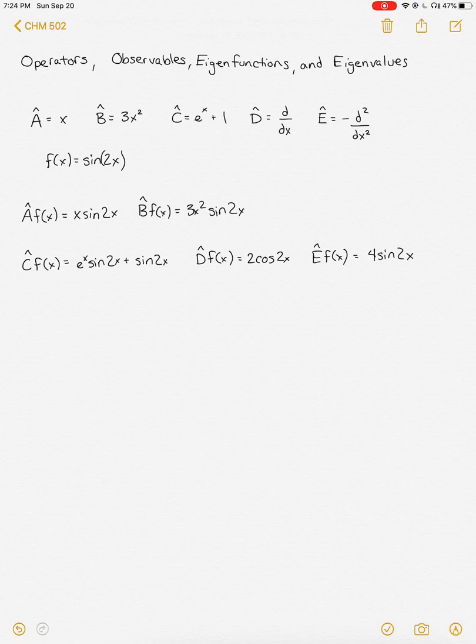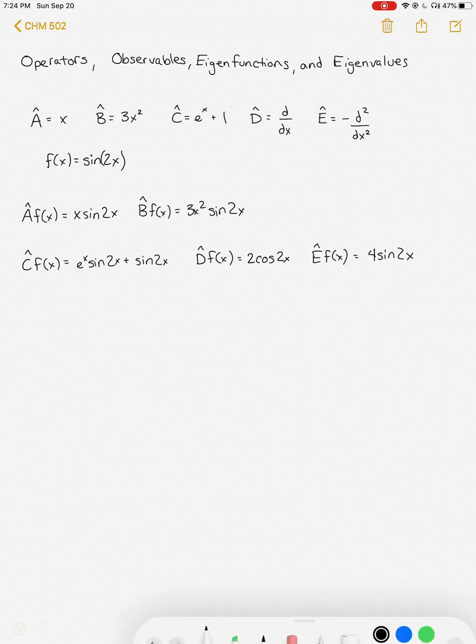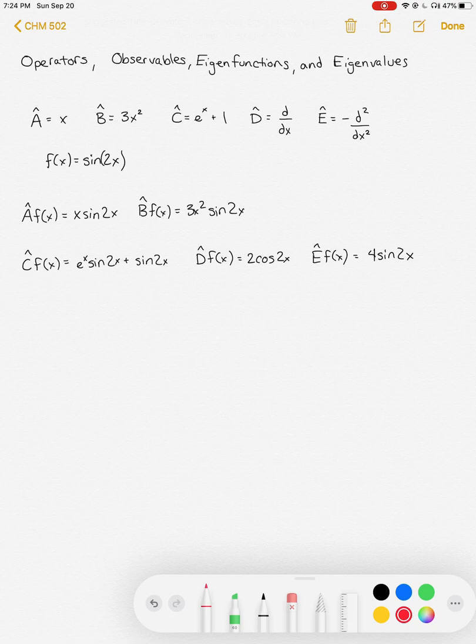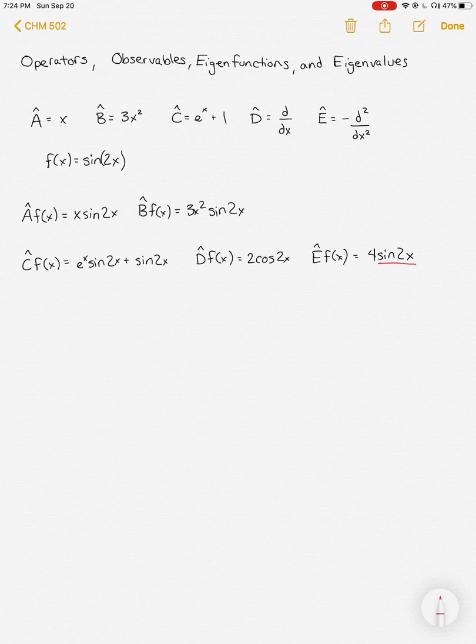You can see we can do any sort of operators on any sort of function, and we typically get a different answer out for each one, a different kind of function. However, some operators, when operating on certain functions, will generate a function multiplied by a constant. So we can see here for operator E, that sine of 2x is our original function. So when we did operator E on our function sine of 2x, we ended up with 4 times our original function.